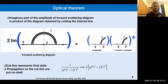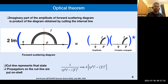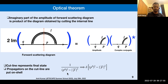Next I would like to talk about the optical theorem. It states that two times the imaginary part of the forward scattering amplitude equals the product of the amplitude of the process obtained from the cut line times the complex conjugate of the other part of the diagram. The cut line represents the final state — it replaces the propagator with a delta function δ(p²), enforcing the particles to be on-shell.